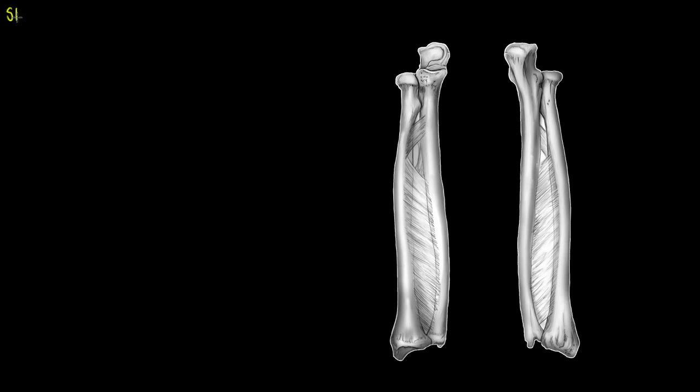Welcome to this tutorial on basic skeletal anatomy, focusing on the bones of our forearm, including the radius and ulna.